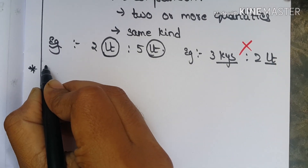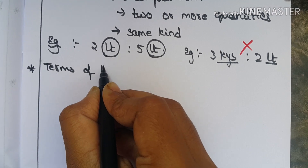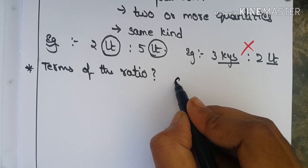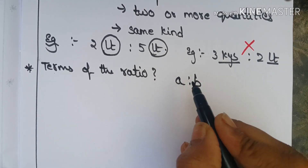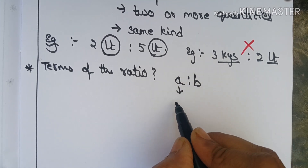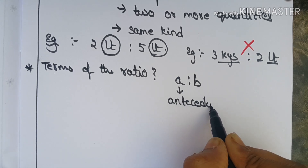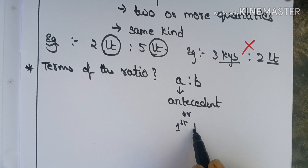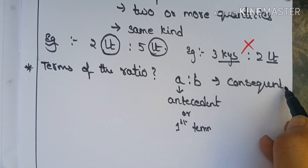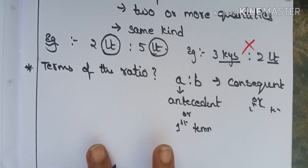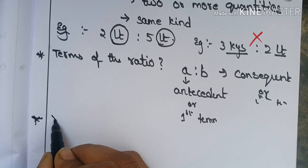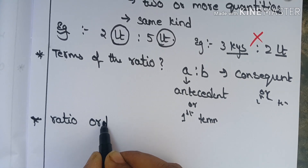Terms of the ratio: suppose the ratio is A is to B. The first term and second term are called the terms of the ratio. In a ratio, order is very important.